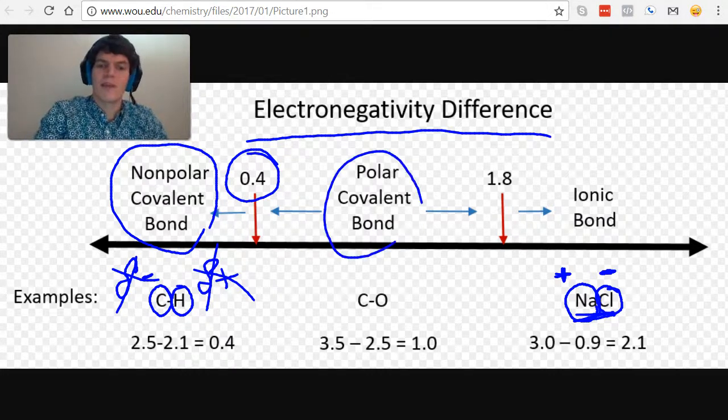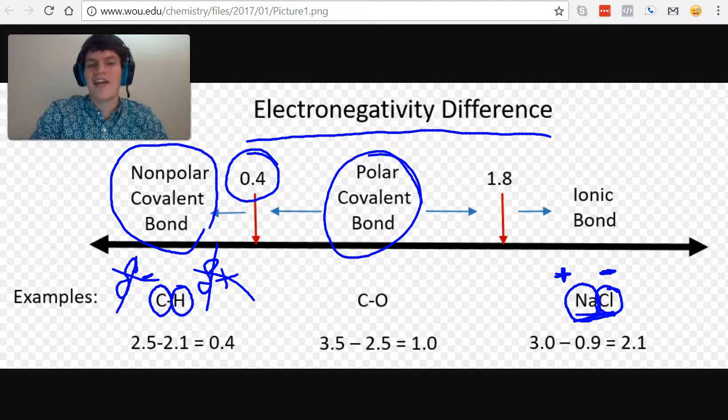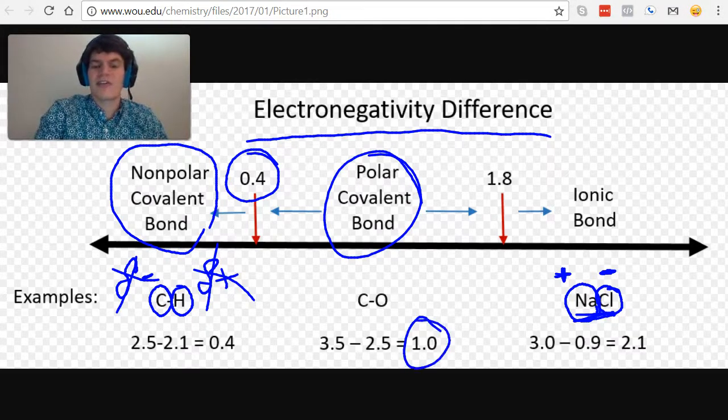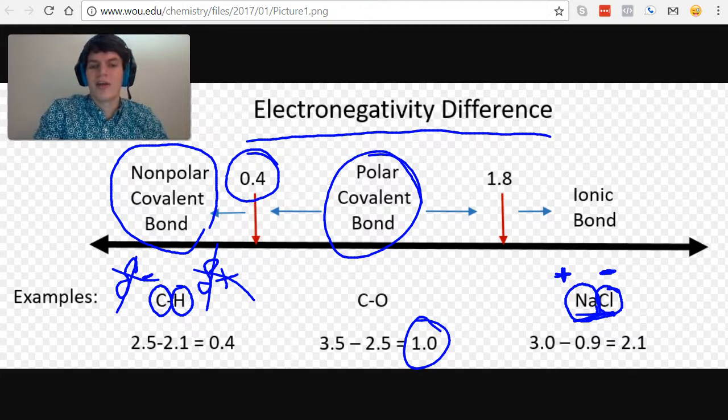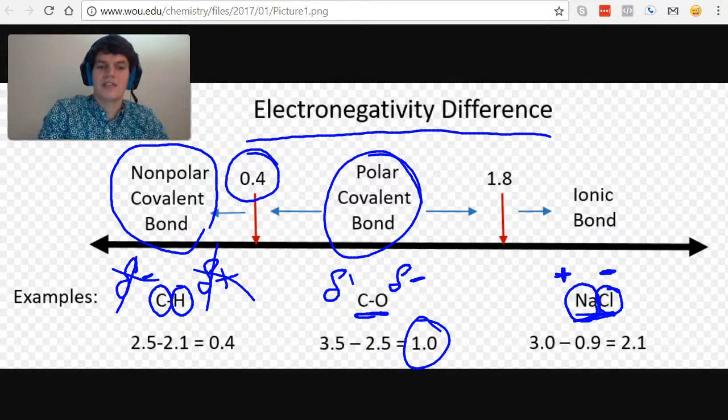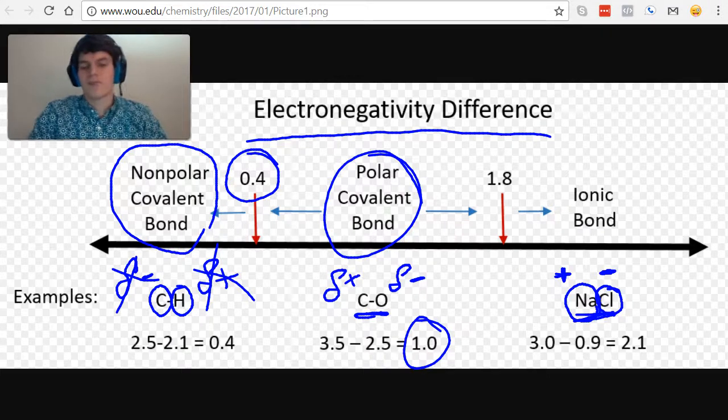Whereas for polar covalent bonds that have a slightly higher electronegativity difference, for instance here the electronegativity difference is 1.0 between carbon and oxygen, in this case we'd think about there being a partial negative charge on the oxygen, a partial positive charge on the carbon.